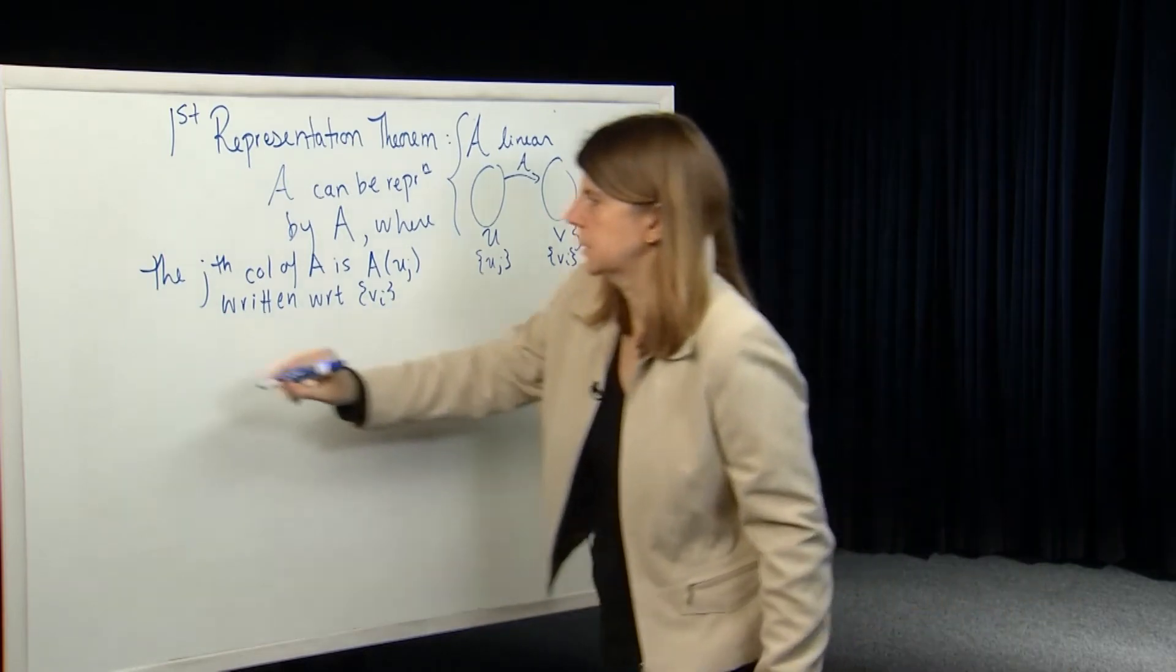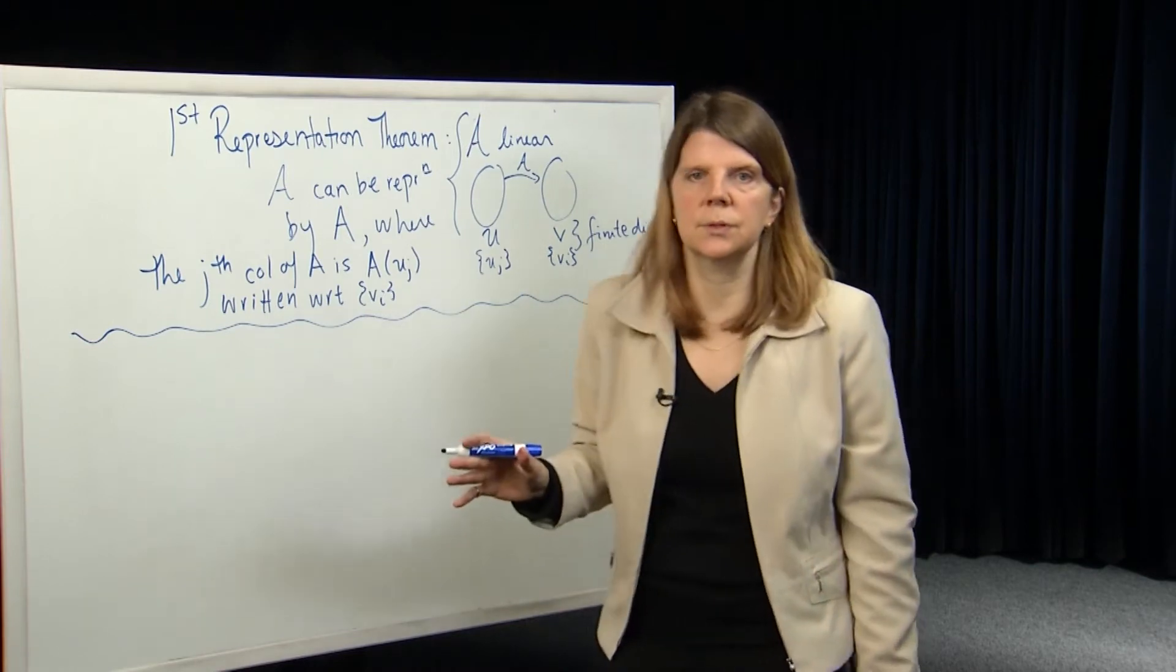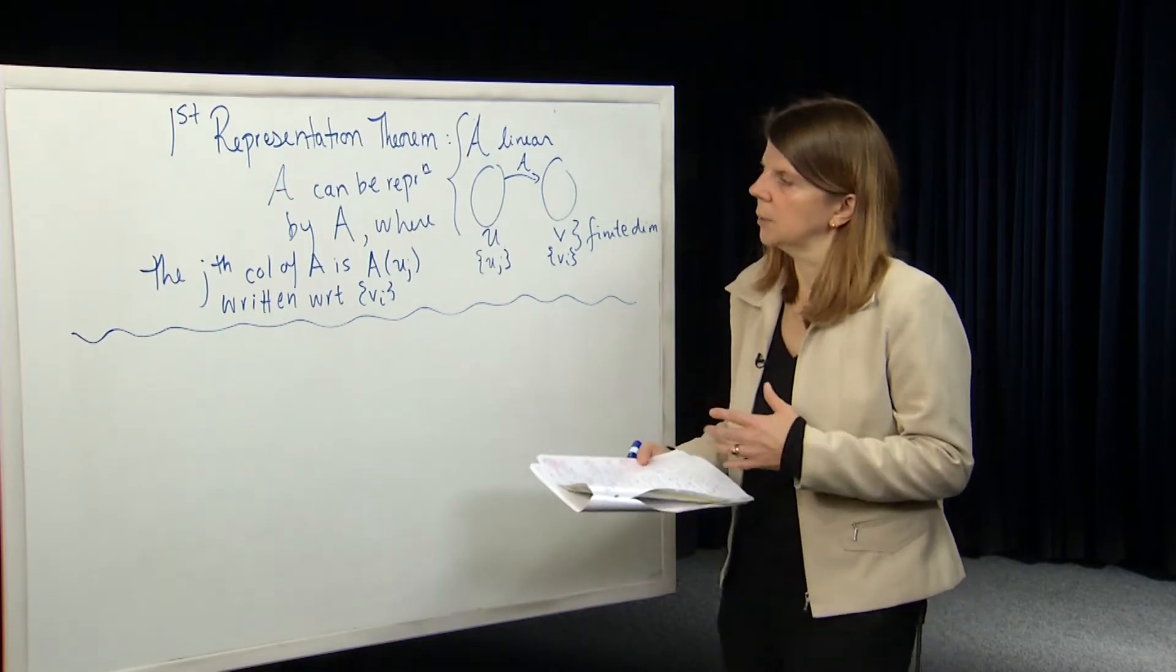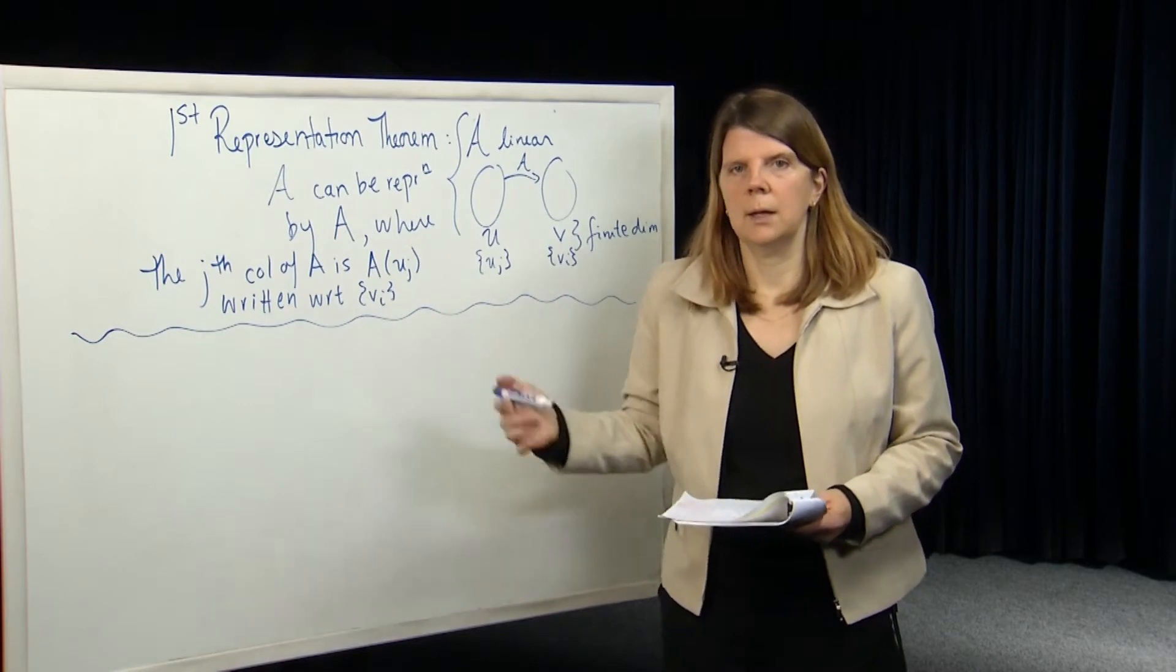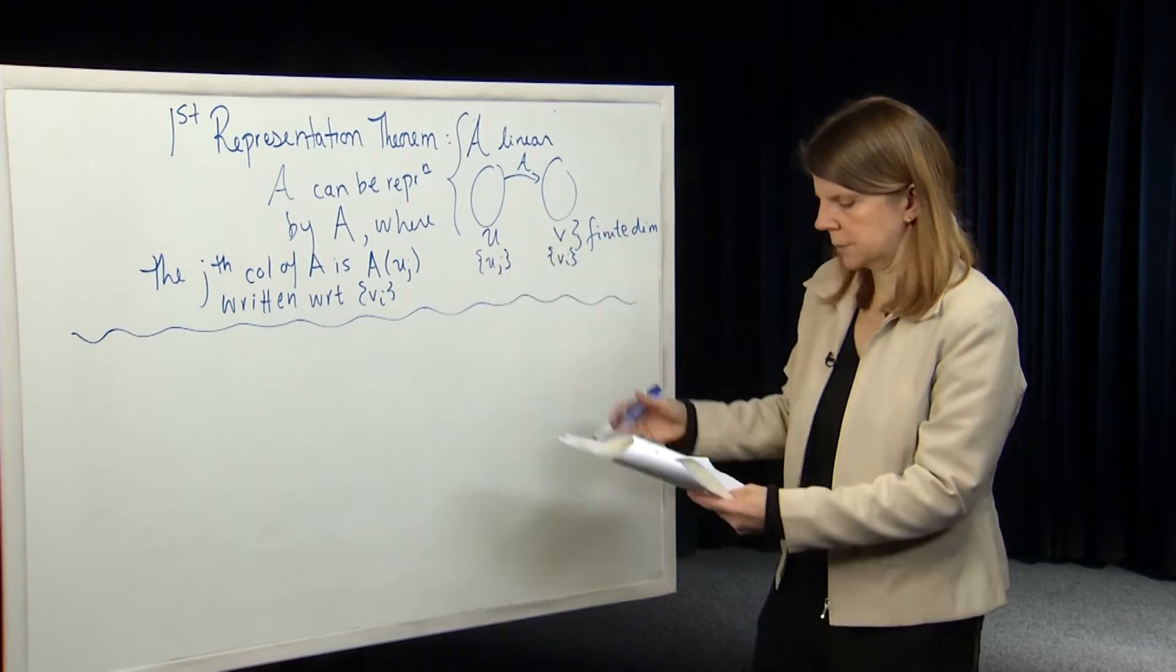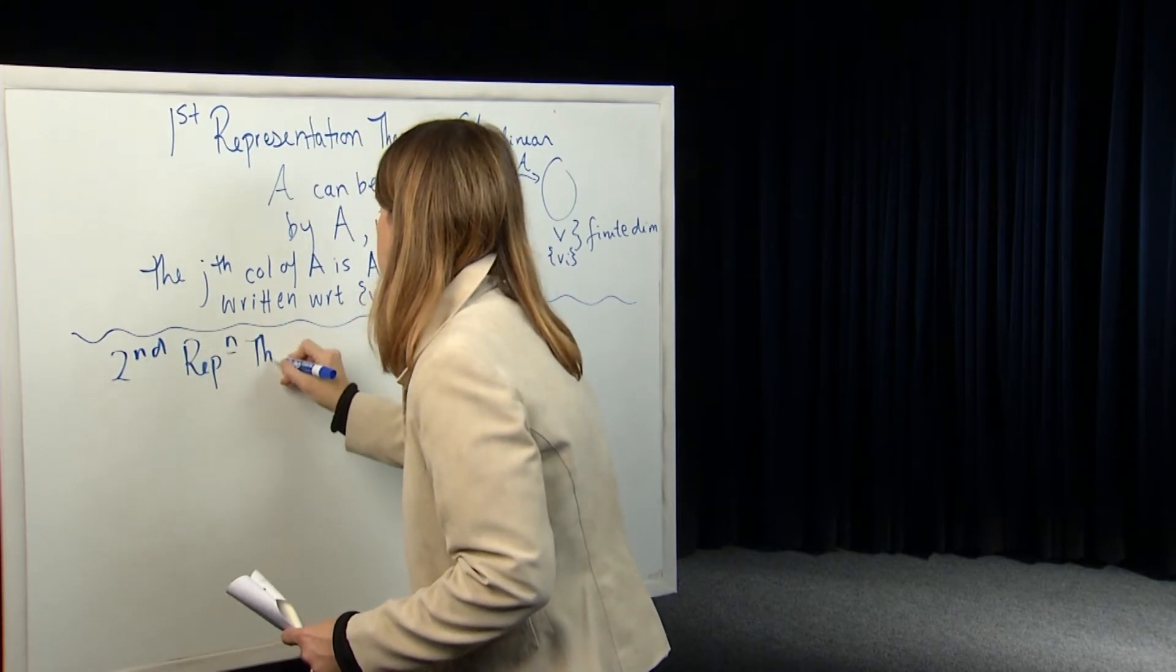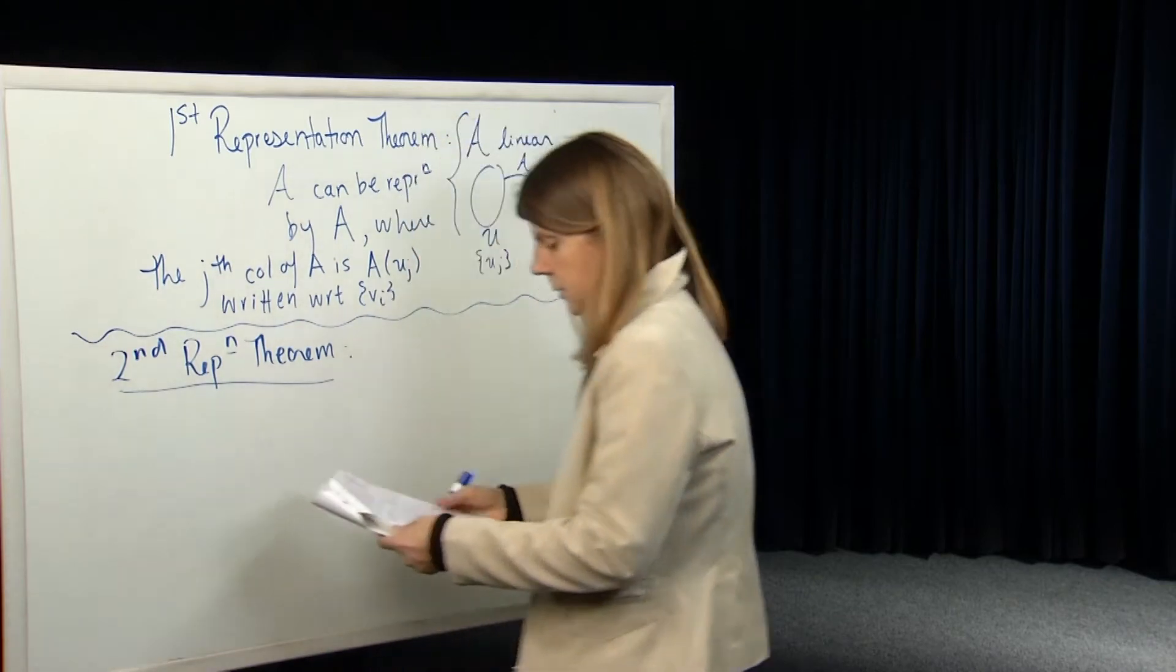So what is the second representation theorem? So now that we're a little adept from our previous module in thinking about A invariant subspaces and direct sums, we can use that to say a little bit more about the form of this matrix A when we have certain properties of the overall spaces. Second representation theorem.